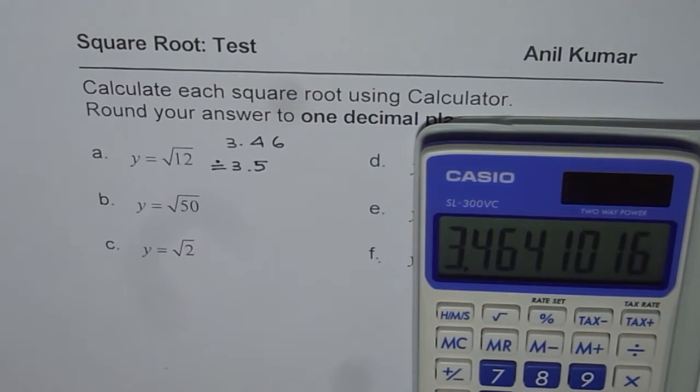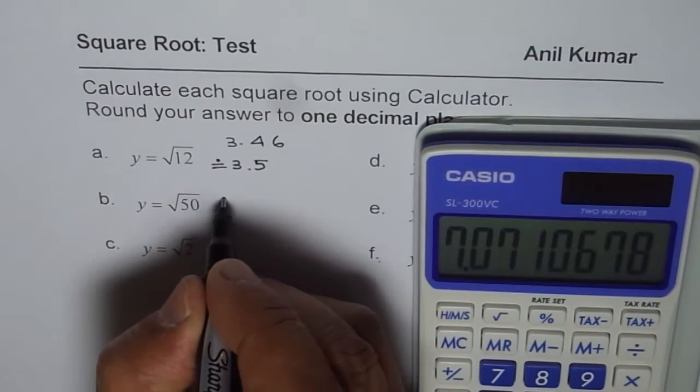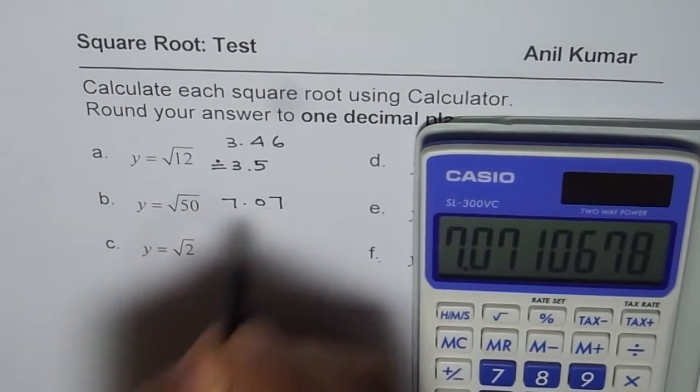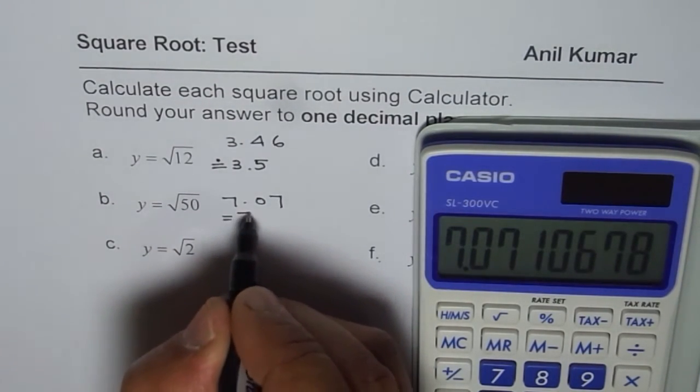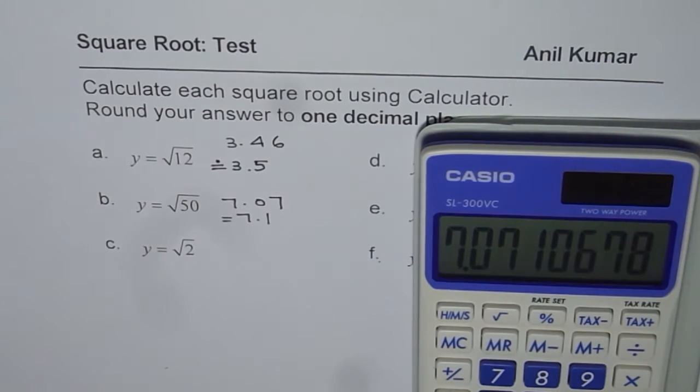Now let's do the next one, which is square root of 50. So we will type 50, then press square root. We get 7.07, 7.07. Rounding it to one decimal place will give us 7.1 as our answer.